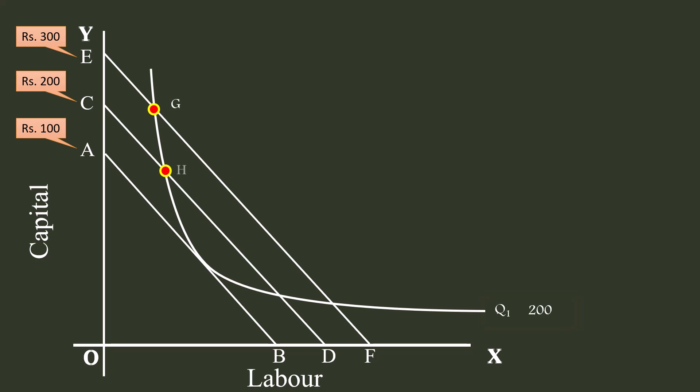Combinations G, H, Q, L, and P are on the isoquant IQ1 as well as on any one of the isocost curves. He has to choose any one of these combinations and will choose the least cost combination. From observation, we can easily say that the producer will choose combination Q, which consists of M units of labor and N units of capital. Q is the optimum combination or least cost combination.